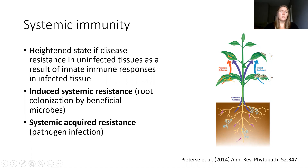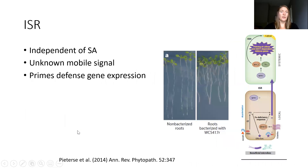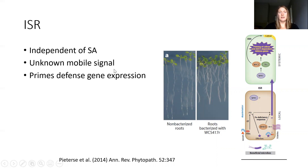Systemic acquired resistance is specifically activated by pathogens. One key difference is that ISR is independent of salicylic acid, whereas SAR is dependent on salicylic acid. Both involve unknown mobile signals, although with ISR we don't have many candidates, while SAR has quite a few discovered signals but no single one seems to be the key signal.